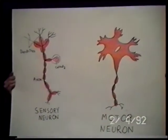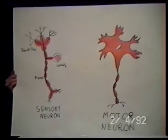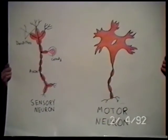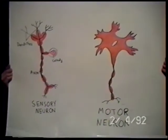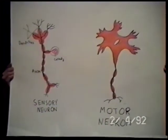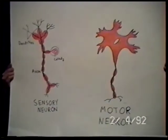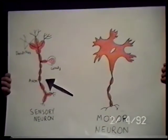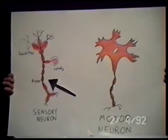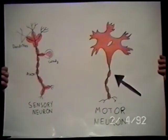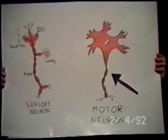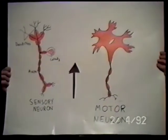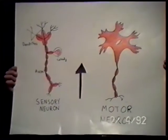The Central Nervous System is composed of a basic unit. This basic unit is the neuron. Now, there are three types of neurons: the Sensory Neuron, the Motor Neuron, and the Interneuron — not pictured here.